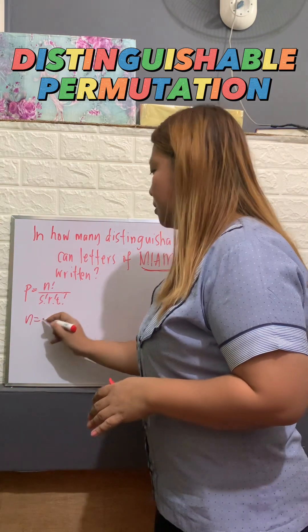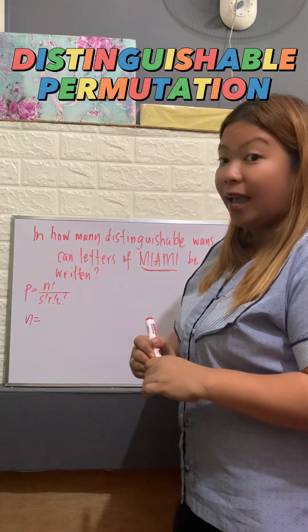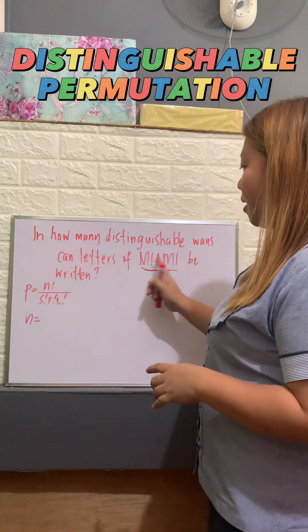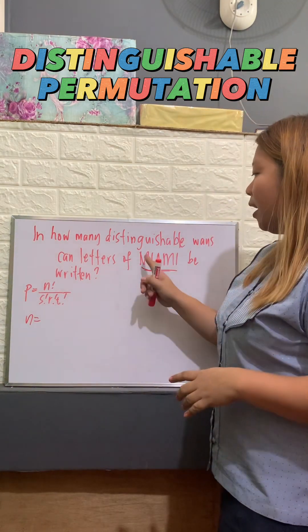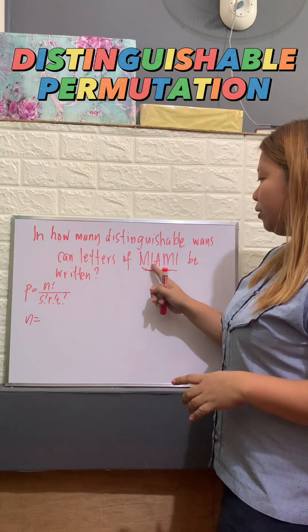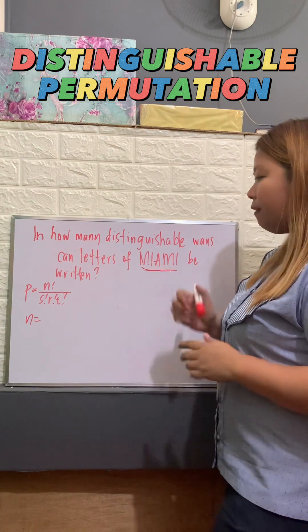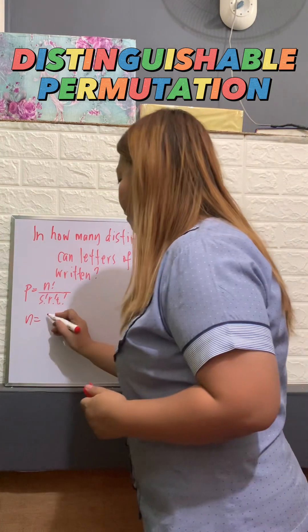Now, what is our N? Our N here is the number of objects. 1, 2, 3, 4, 5. So we have here 5.